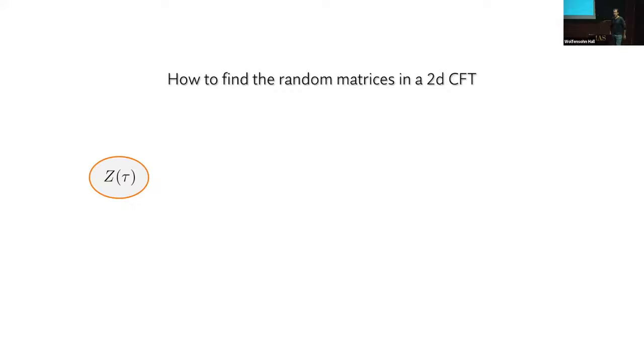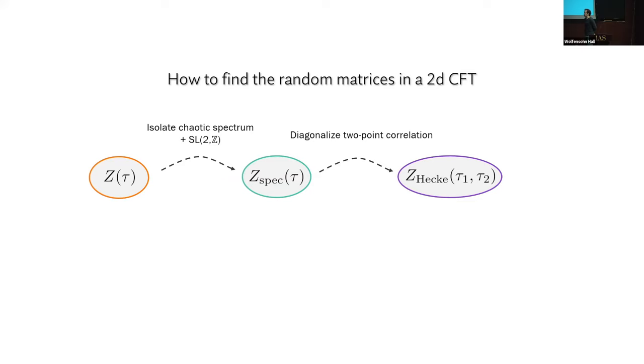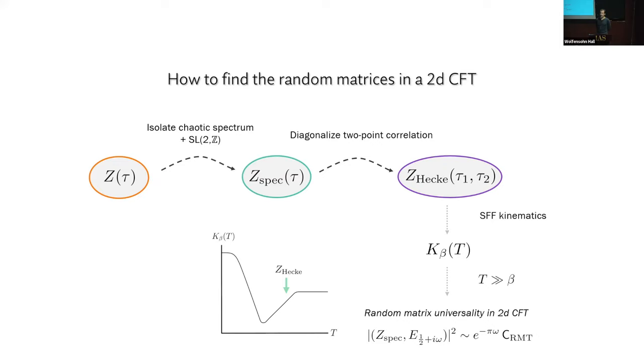So as a cartoon, how do we find the random matrices in the 2D CFT in the sense of the random matrix universality as indicated by the linear ramp? You start with your partition function. You isolate the chaotic spectrum in the way that I prescribed. We diagonalize the two-point correlation. And then we go to SFF kinematics, study the spectral form factor, and demand that there's a ramp when we get this condition.